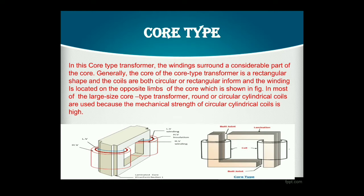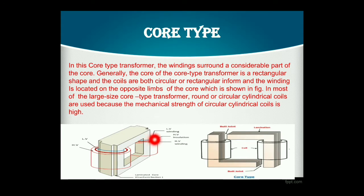Generally, the core of the core type transformer is a rectangular shape, and the coils are both circular or rectangular in form. The winding is located on the opposite limb — so there are two limbs. The windings are located above the limb of the core, as shown in the figure. Most of the larger size transformers are core type transformers. Round or circular cylindrical coils are used because they provide mechanical strength. In the outer part there is a high voltage winding installed, and nearer to the core there is the LV or low voltage winding, and between these two windings there is high voltage insulation.